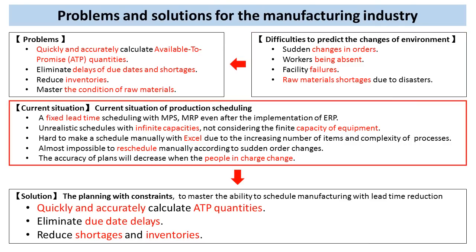When talking about the current situation of production scheduling, even after the implementation of ERP, companies schedule a fixed lead time with MPS and MRP. Moreover, if companies didn't consider equipment capabilities, they couldn't make a realistic schedule. If you make a schedule manually with Excel, the work is very hard for your staff due to the increasing number of items and complexity of processes.